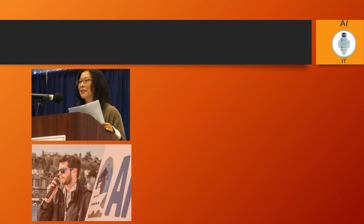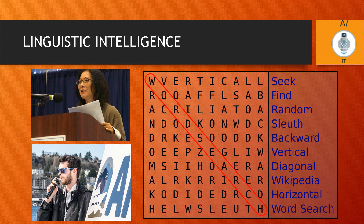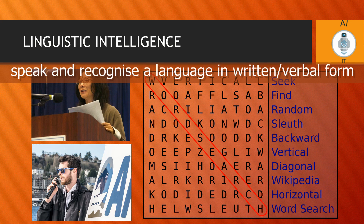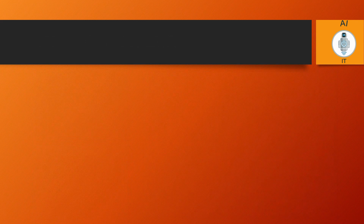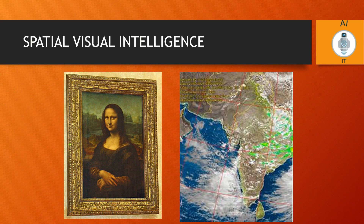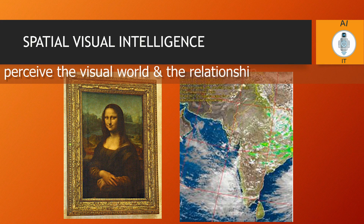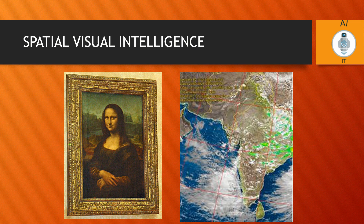Some people are very good at speaking and solving word puzzles. Lawyers, narrators, orators, and teachers are examples of those who possess linguistic intelligence — the ability to speak and recognize a language in written or verbal form. Artists, map readers, and architects possess spatial visual intelligence, which is the ability to perceive the visual world and the relationship of one object to another.